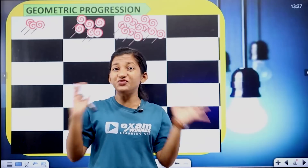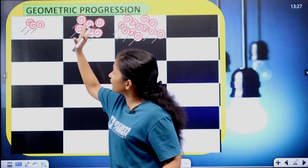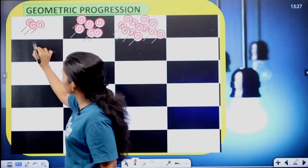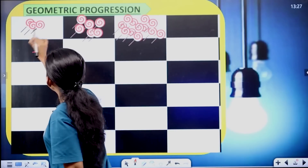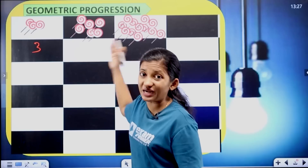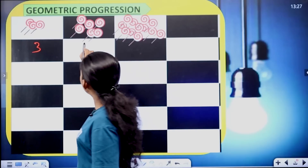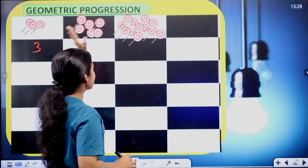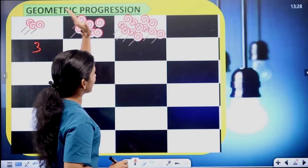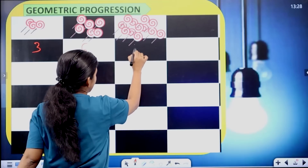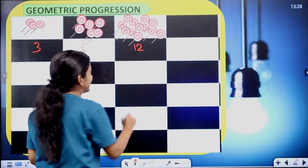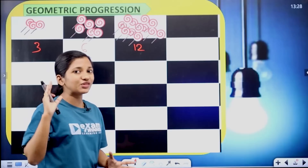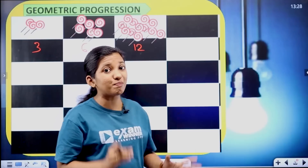Hi friends! Now, let's take a look at our favorite title. First column: 3. Second column: 3. First column: 6. Third column: 3. Second column: 2. That gives us 12. So let's take a look at our pattern.